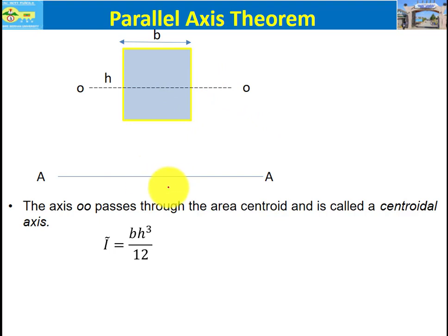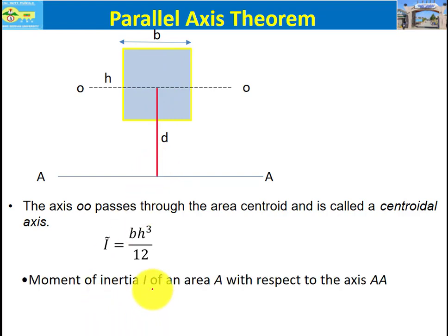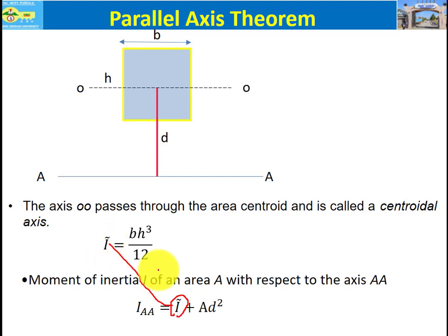For a rectangle, the moment of inertia about O-O — since O-O is the centroidal axis — is b·h³ over 12. To find the moment of inertia about A-A, where d is the distance between O-O and A-A, we apply the parallel axis theorem: I about A-A equals I-tilde plus A·d². Here I-tilde is the centroidal moment of inertia, A is the area, and d is the distance between the two parallel axes.